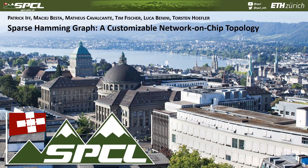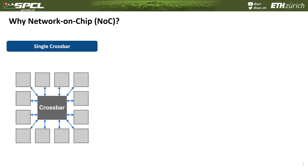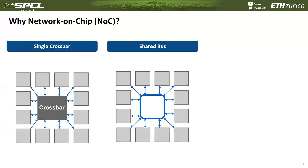Let's start with the question: why do we even need network on chips? As you all know, today's chips have an increased number of compute cores, and traditional solutions to provide connectivity between cores, such as a single crossbar or a shared bus, are no longer scalable. In a single crossbar case, the area does not scale well with the number of cores, and in the shared bus, the performance does not scale well with the number of cores.